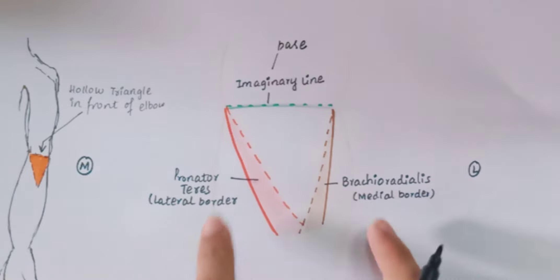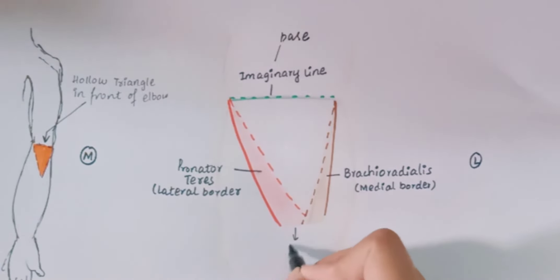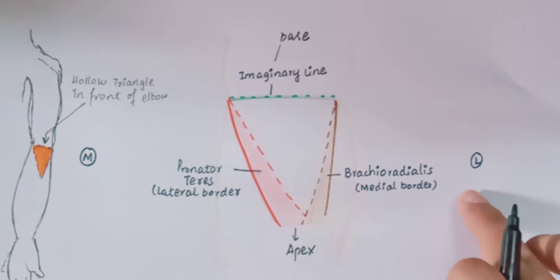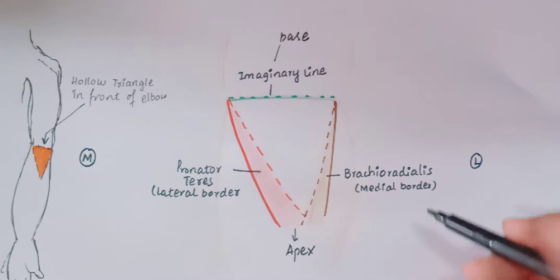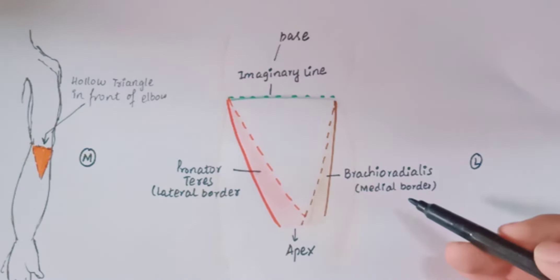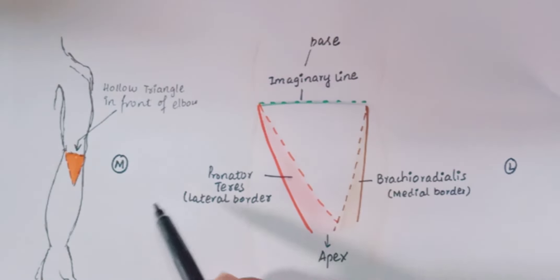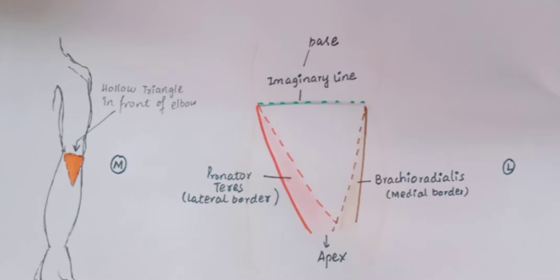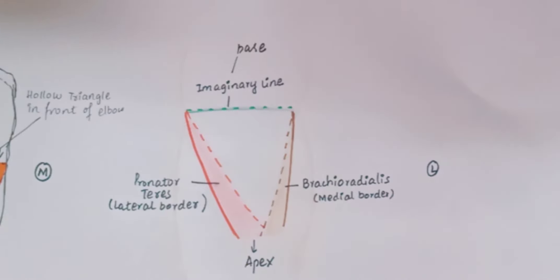The lateral boundary of the cubital fossa is formed by the medial border of the brachioradialis muscle, and the medial boundary of the cubital fossa is formed by the lateral border of the pronator teres muscle. These are the boundaries of the cubital fossa.